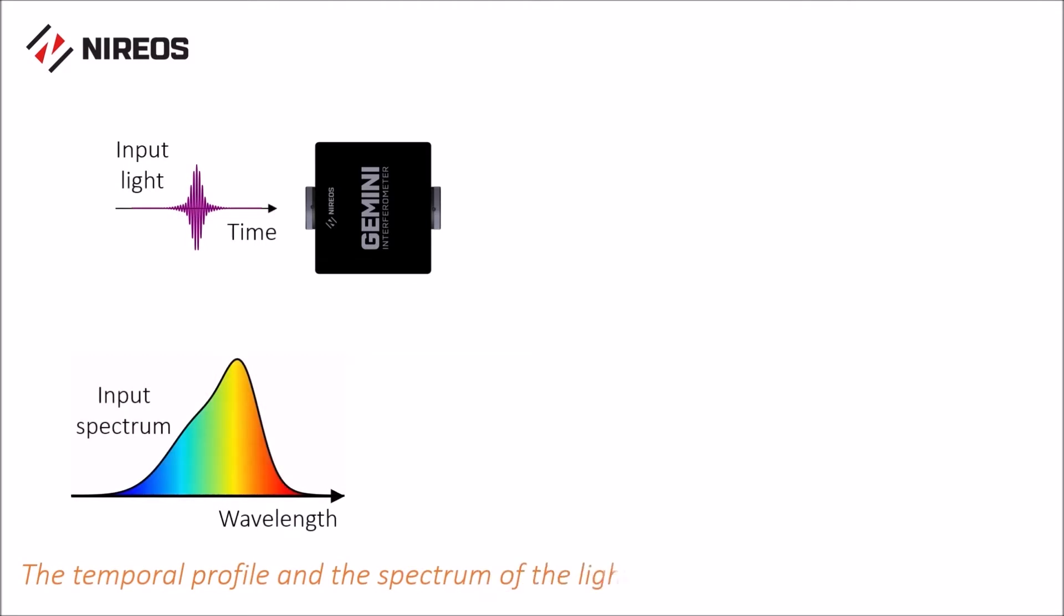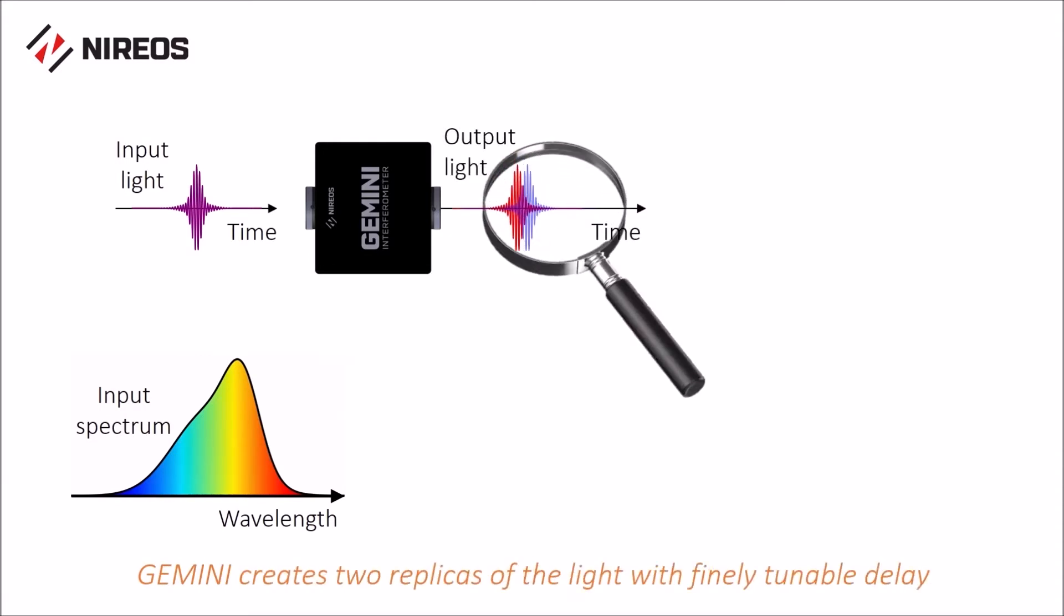The temporal profile and the spectrum of the light are linked via Fourier transformation. Gemini creates two replicas of the light with finely tunable delay.